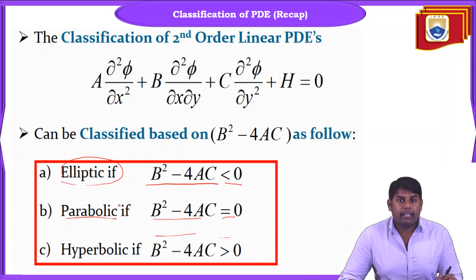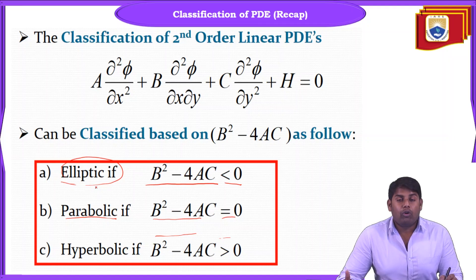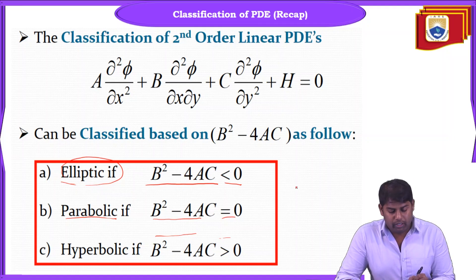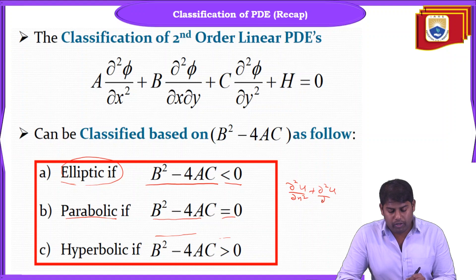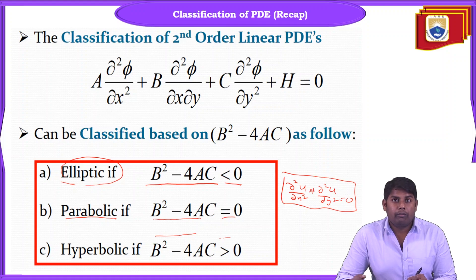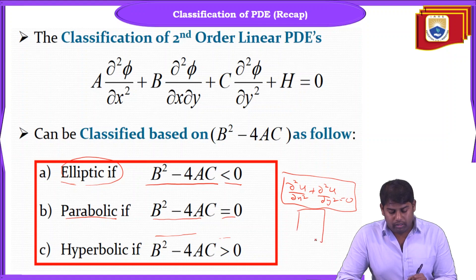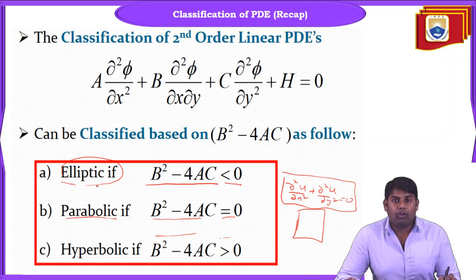Elliptic equations are based on the boundary value problem. For example, with the Laplace equation ∂²u/∂x² + ∂²u/∂y² = 0, when applying boundary conditions over a domain, you need to specify conditions on all four walls. That is why the elliptic equation is called the boundary value problem.